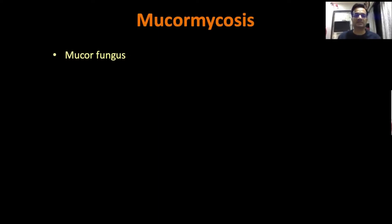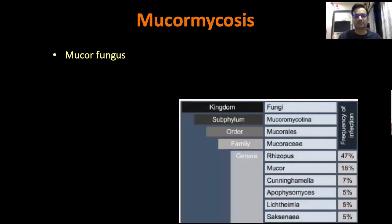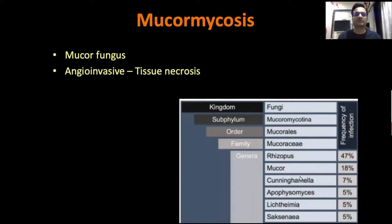Remember, mucormycosis doesn't mean the mucor fungus per se — it's the family of mucorales. In the kingdom of fungi, there is the subtype mucormycotina, of which there is mucorales, and the family mucoralesis, of which mucor is a specific genus. Mucor and mucormycosis are not synonymous; rhizopus is actually more common than mucor. The key issue with mucormycosis is it is angio-invasive, leading to tissue necrosis and significant mortality and morbidity.